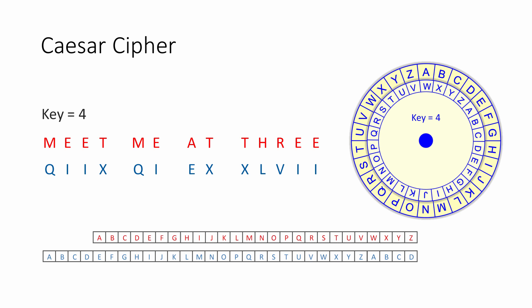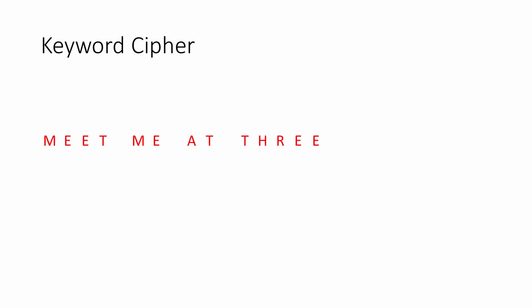So how can we improve on this? Instead of using a single number for the key, you can use a keyword. In this example, the keyword is 'cat'. Write the keyword repeatedly underneath the original message as many times as you need to, so that there's a keyword letter for each letter of the plaintext.